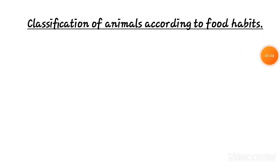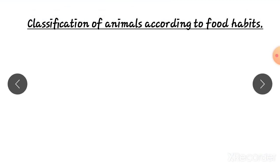In the previous class we learnt about terrestrial animals, aquatic animals, amphibians, and similarities and differences between animals and human beings. Today, in this class, we learn about classification of animals according to food habits.